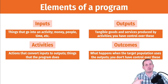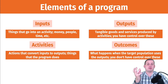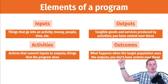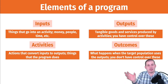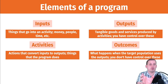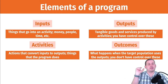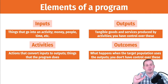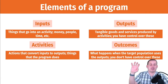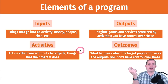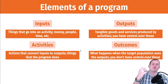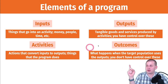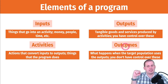An output is the actual tangible good or service produced by the activity. In this case it's adding somebody to food stamps and getting them an EBT card that lets them spend money in a grocery store. You're taking money, time, and people doing something and converting that into some sort of tangible output — activities are like little factories that take inputs and turn them into outputs.